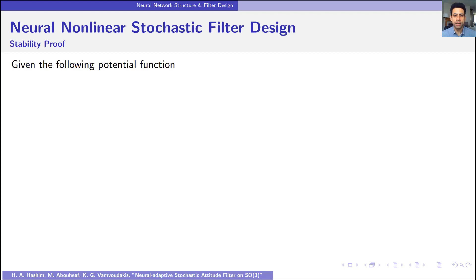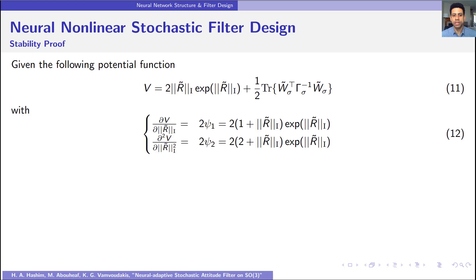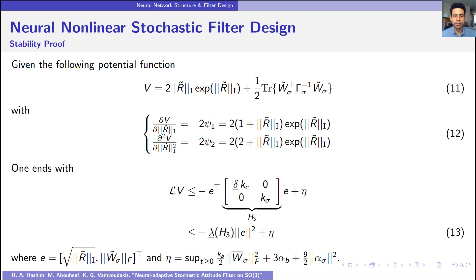To prove this result, let us define the following potential function V, where its first and second partial derivative with respect to the normalized equilibrium distance attitude error is as follows. With the following differential operator, where E includes the normalized equilibrium distance of attitude error and the Frobenius norm of neural weights.